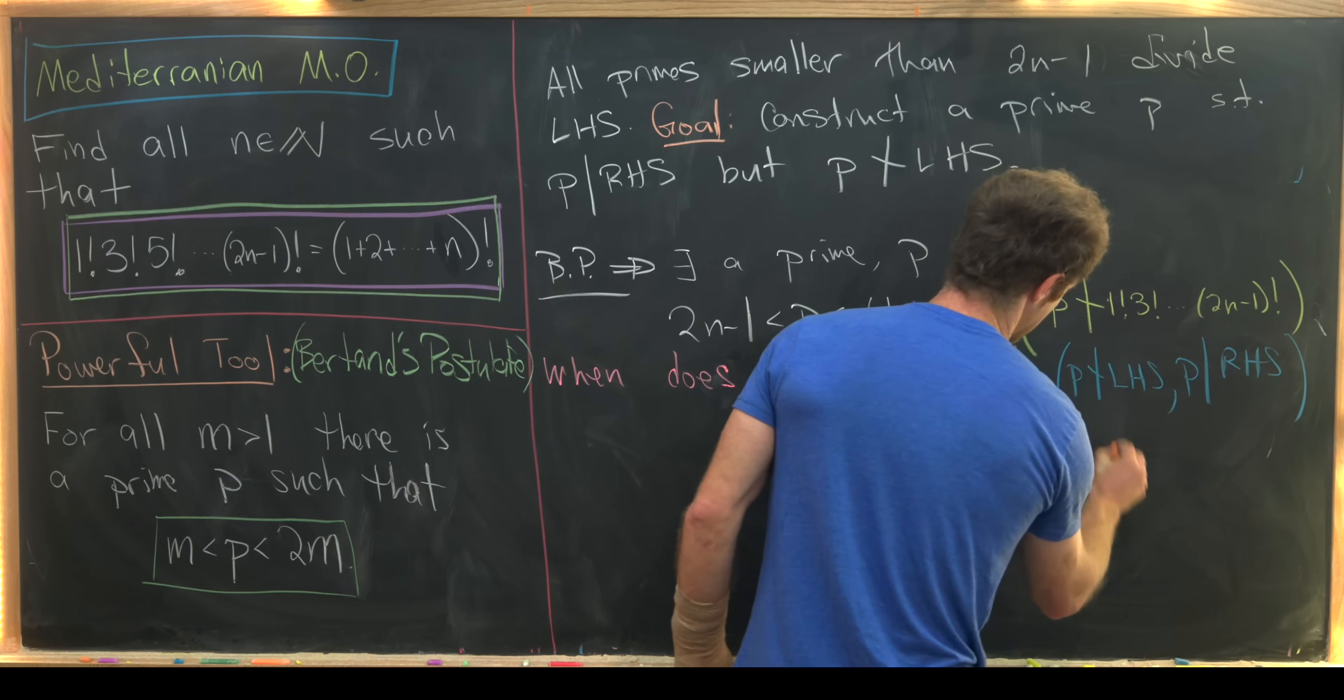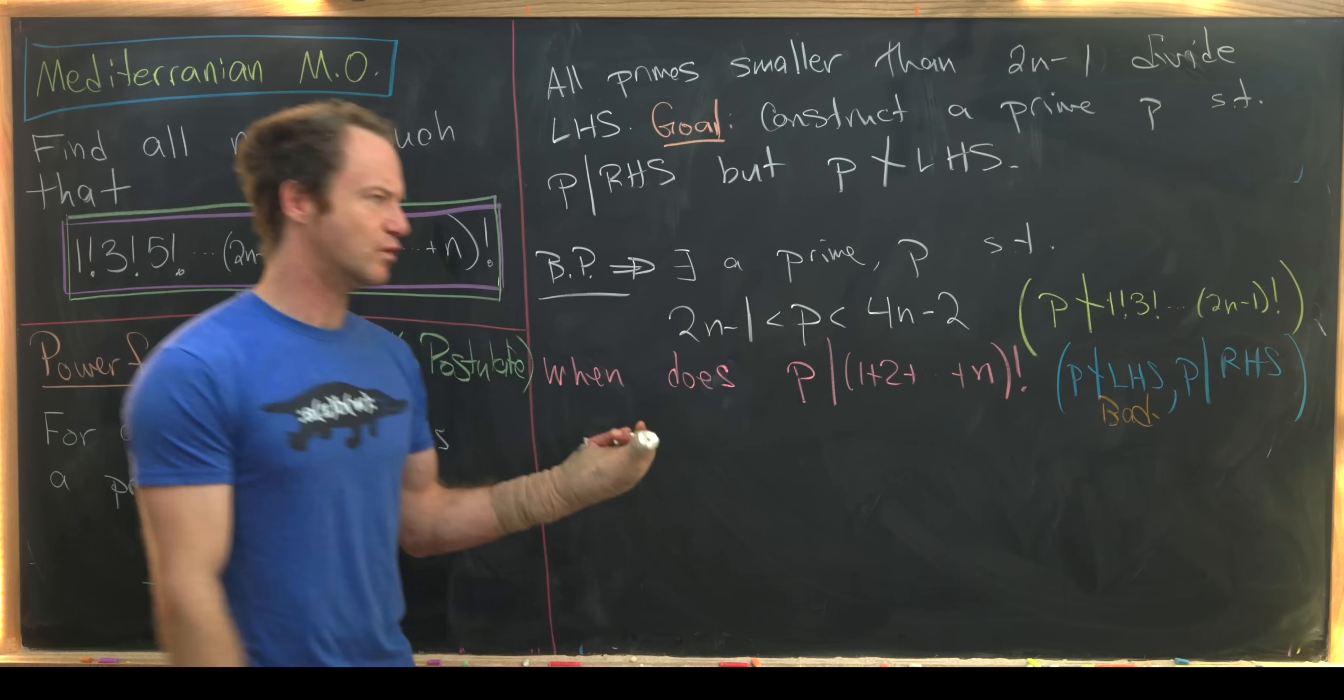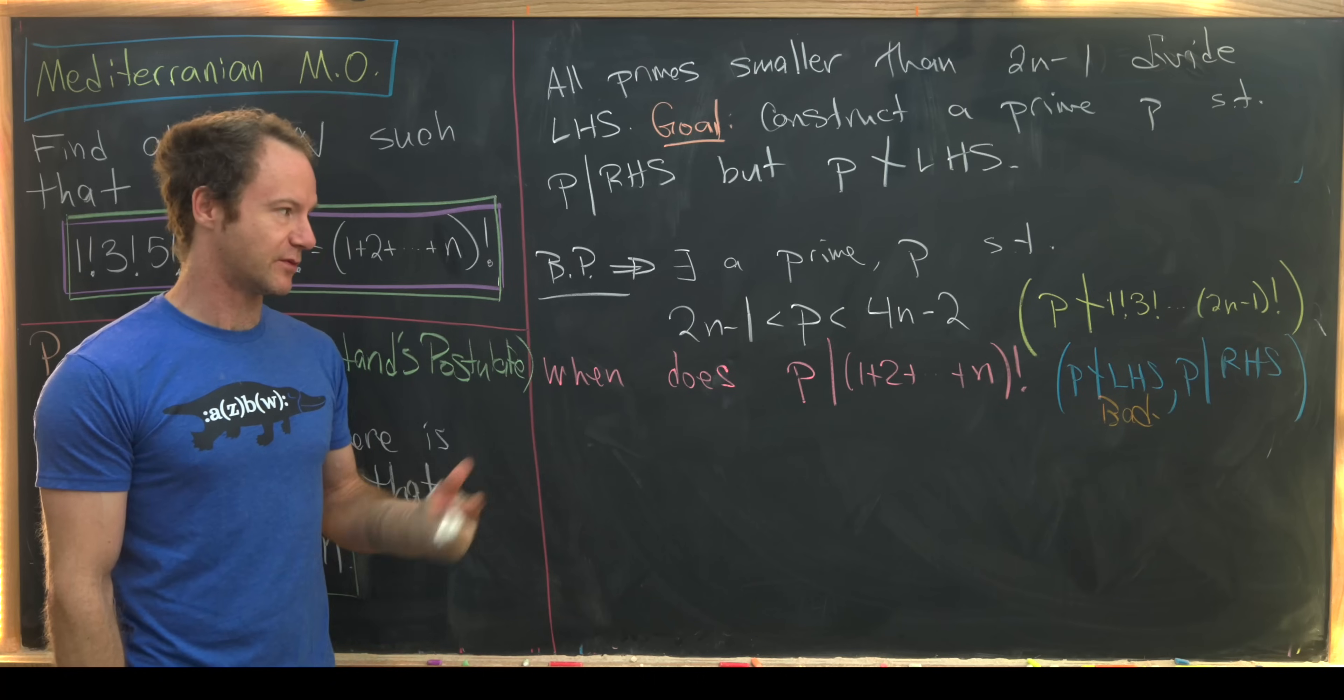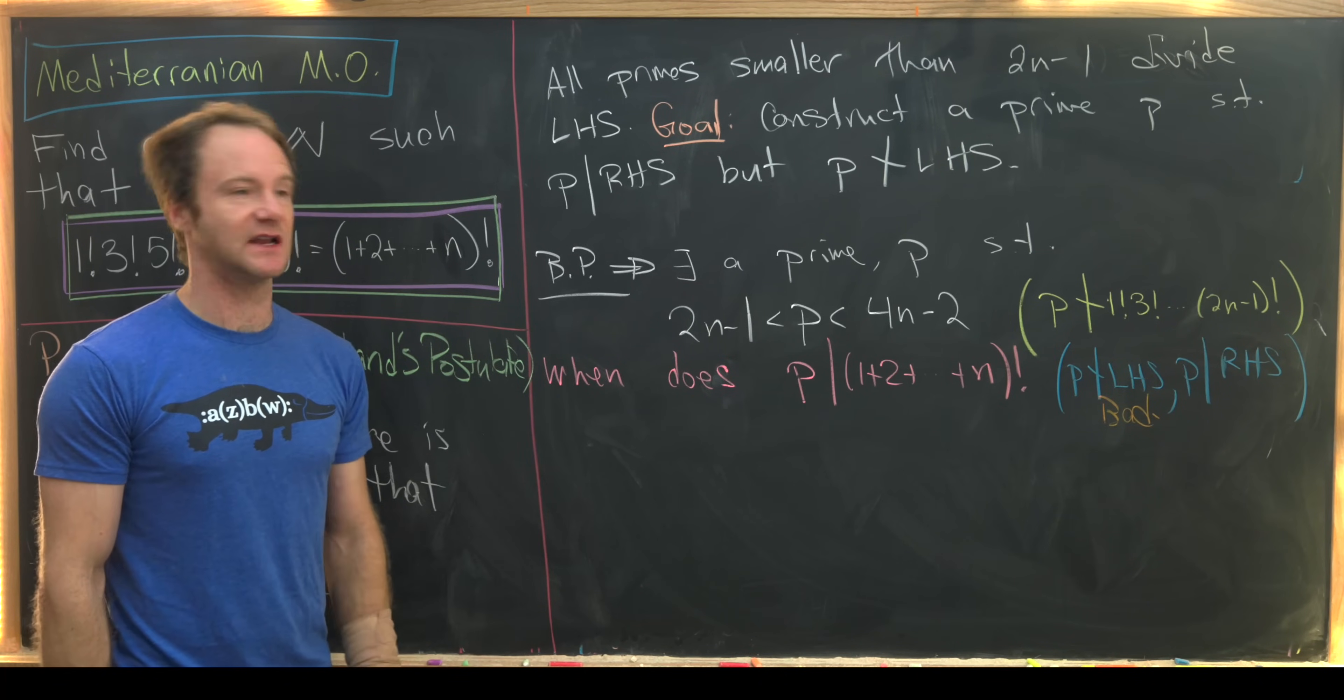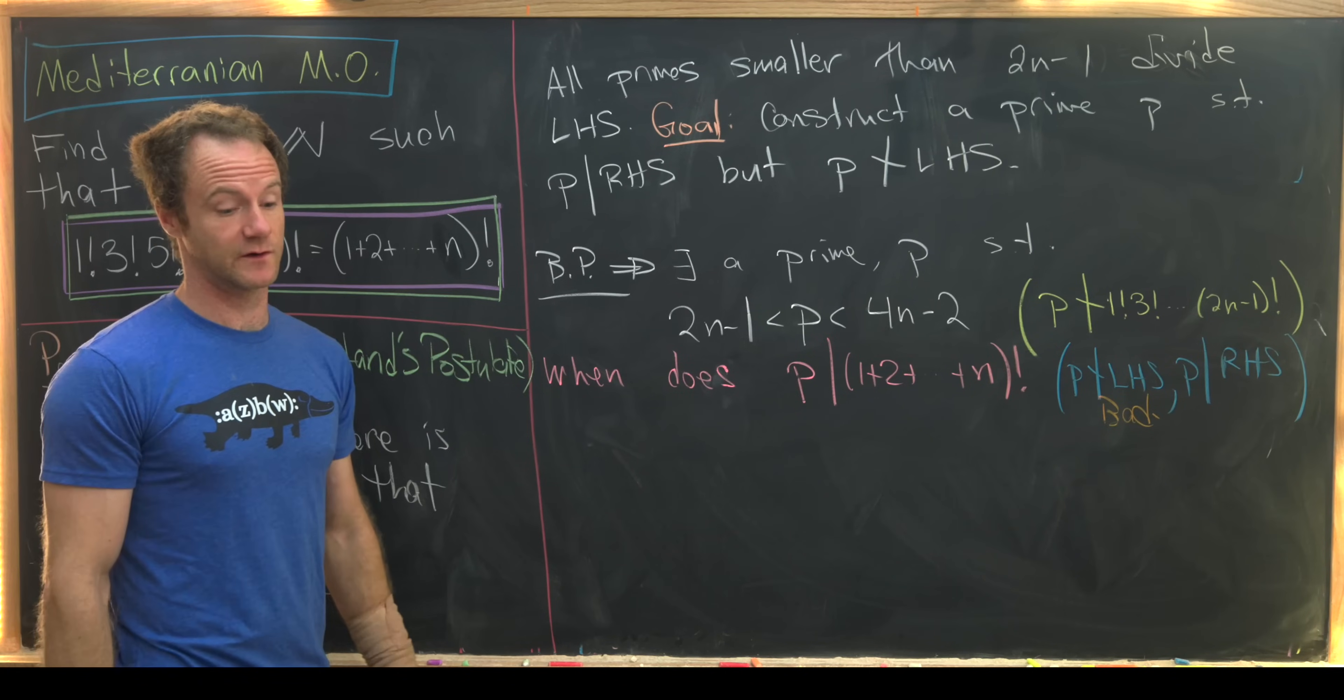That is most definitely bad because that means we will not have a solution, because one side of our equation will be divisible by some prime that the other side is not divisible by. So in fact we want to throw these numbers out and look at what's left over.